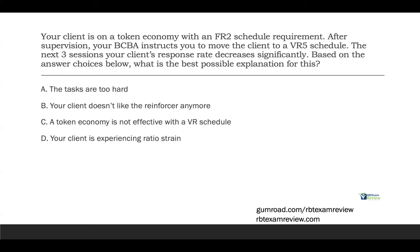Answer C — a token economy is not affected by the VR schedule — that's definitely wrong because VR is actually the strongest basic reinforcement schedule. It's the one that maintains behavior the best and is the hardest to extinguish. That leaves us with D — your client is experiencing ratio strain. That's the magic term. Ratio strain is what happens when you've faded your reinforcement too quickly and as a result the client stops responding. You've gone too quickly from FR2 to VR5 and need to dial it back. Our answer is D.